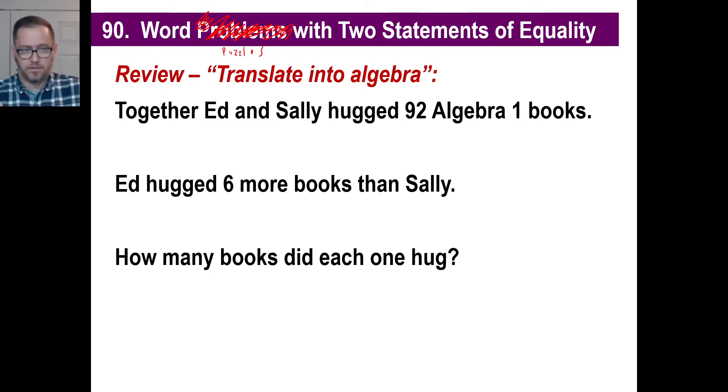Practical stuff here. Together Ed and Sally hugged 92 algebra 1 books. Together we could say Ed plus Sally, whatever they did together, it equals 92, right? We don't know which one is which. Ed hugged six more books than Sally. So what does Ed equal? Right, Sally plus six. How many books did each one hug?